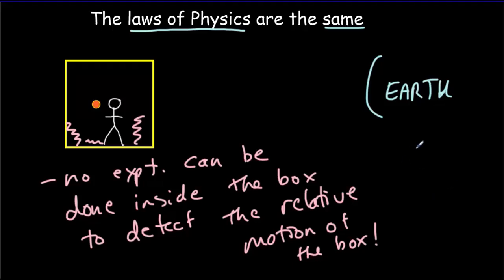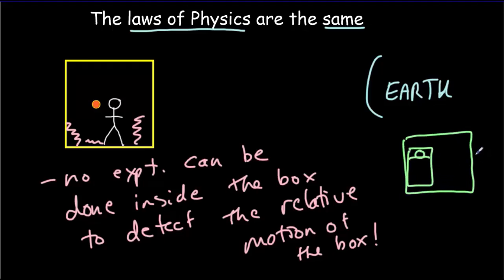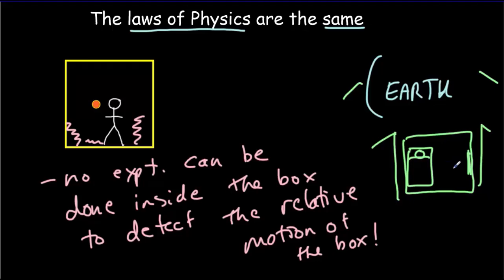Your bedroom is kind of a box. Say at night you go to sleep, draw the blinds, and during the night your bedroom is transported onto a big plane. When you wake up, you're on the plane moving at constant velocity with no turbulence. You wouldn't know the difference — everything on a plane feels just like it does on Earth. The physics isn't any different. We really only know we're on a plane because we see references like stewardesses and pilots.